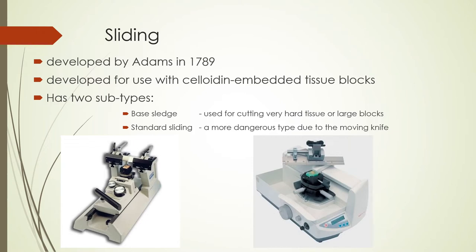The standard sliding microtome garnered the nickname of the most dangerous type due to the moving knife. In most microtomes, the moving part is the tissue block — as in the rotary and rocking microtomes. But in the standard sliding microtome, the knife itself is moving. So when you're cutting, it is very dangerous because it might cut your finger.